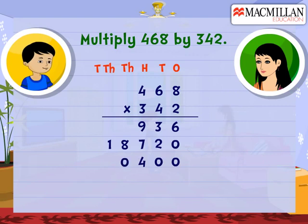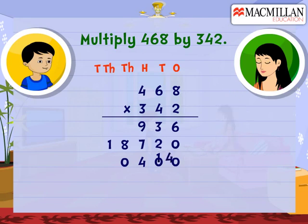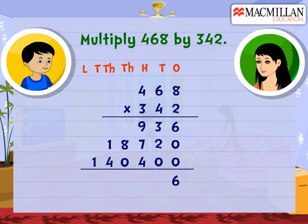And at last 4 by 3. Wow, that was very simple. Yes, but don't forget to add the numbers written below the line. You mean now we will add these numbers? Yes. So we first add numbers at 1's place, then 10's place, then at 100's place. So our answer is 1,60,056.